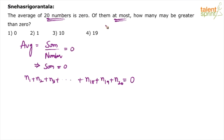The question is: at most how many of these 20 numbers can be greater than zero? Out of these 20 numbers, maximum how many may be greater than zero?